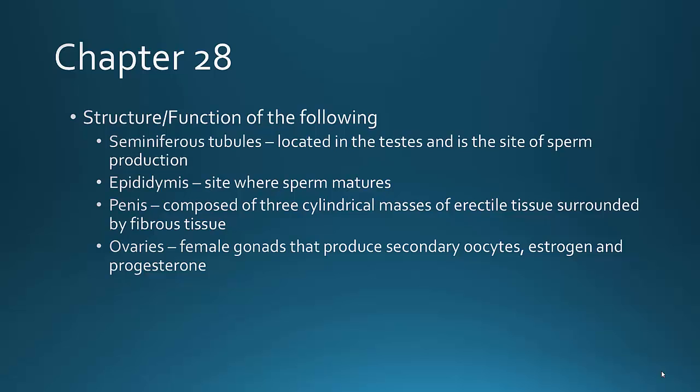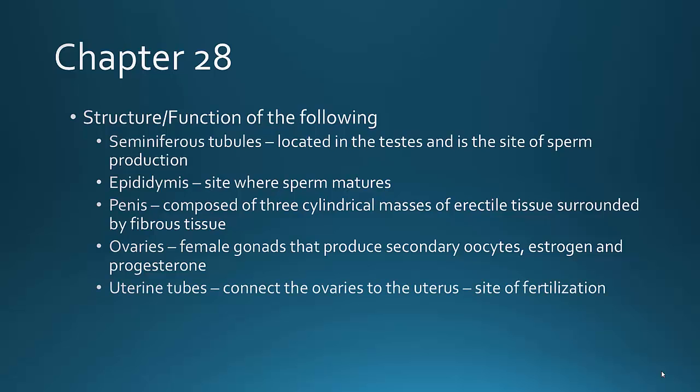In females, we have the ovaries — these are the female gonads that produce the secondary oocytes. Ovaries also release estrogen and progesterone. The uterine tubes connect the ovaries to the uterus. This is also the site of fertilization. Remember that the uterine tubes can also be known as the fallopian tubes or the oviducts.